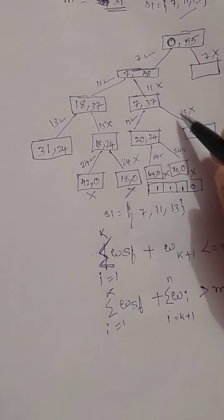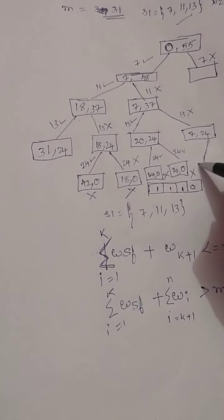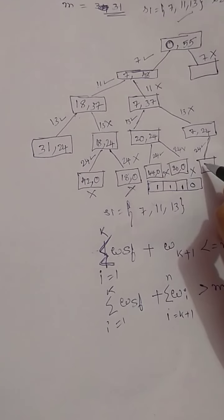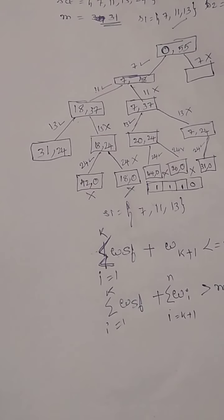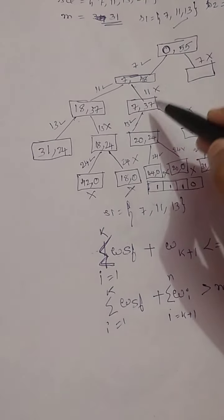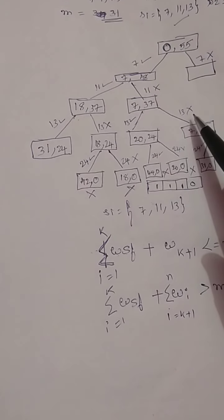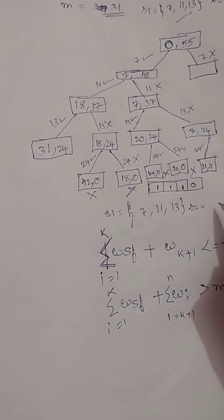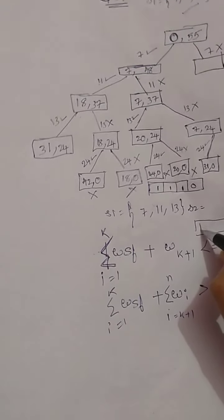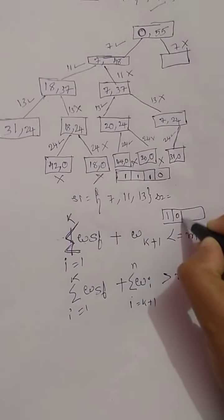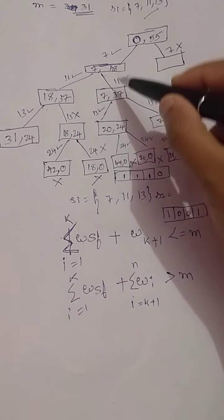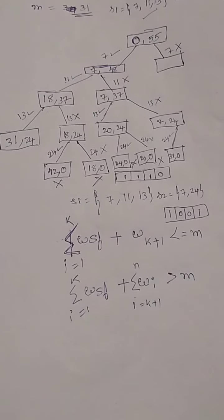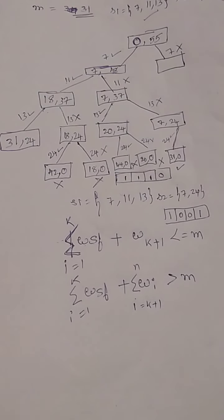Now I try including the fourth weight, 24. The sum becomes 7 + 24 = 31 and the remaining weight is 0. I have got the exact sum of 31. Tracing back the path: weight 7 included, weight 11 not included, weight 13 not included, weight 24 included. The second solution in array form is [1, 0, 0, 1] — weights 7 and 24 included.